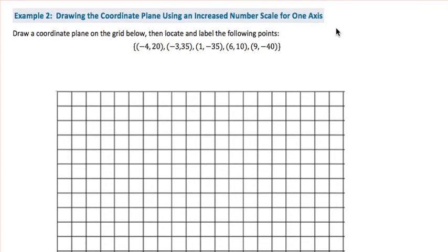In example 2, we're drawing the coordinate plane using an increased number scale for one of our axes. When we look at the ordered pairs that we've got to graph, first we should look at the range of x coordinates and then separately look at the range for y coordinates. Our x coordinates range from negative 4, negative 3, 1, 6, 9.